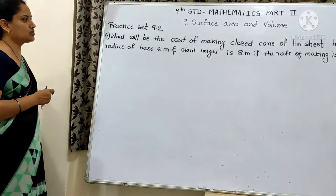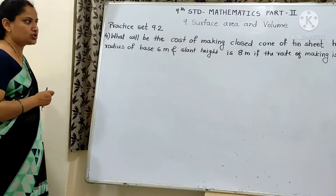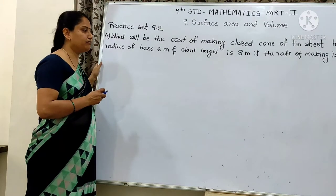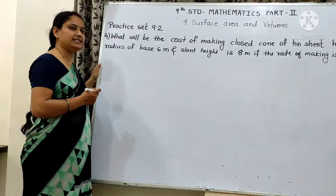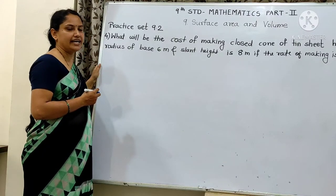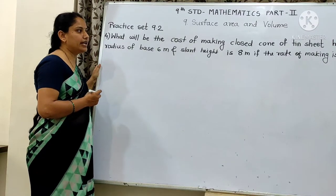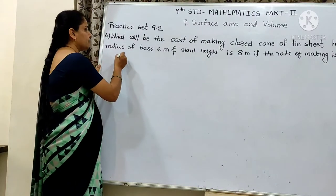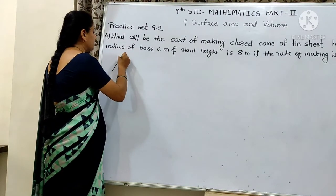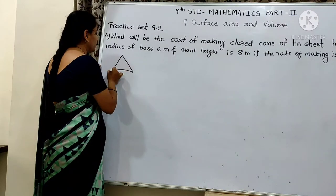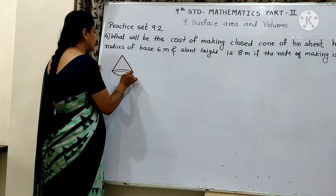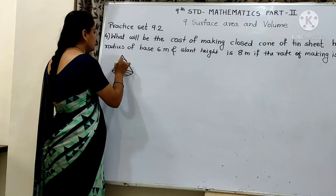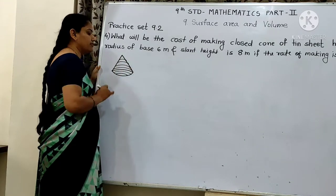What will be the cost of making closed cone of tin sheet having radius of base 6 meter and slant height 8 meter. If the rate of making is rupees 10 per square meter. Now we will see closed cone of tin sheet. Closed means that there is a high area and curved surface area. This is the total surface area.